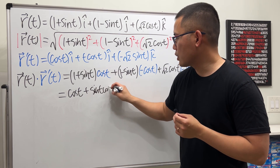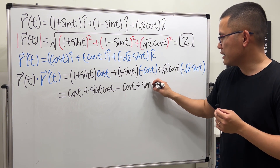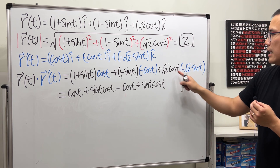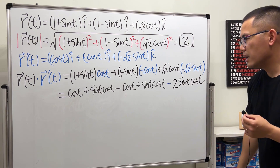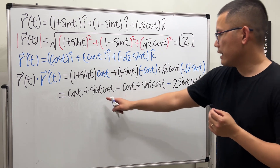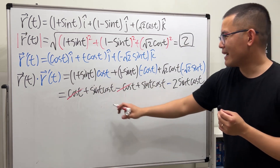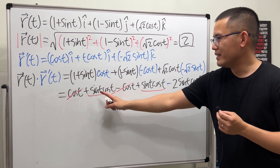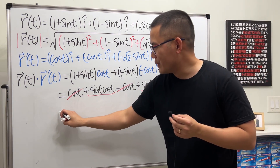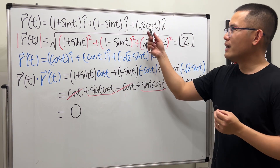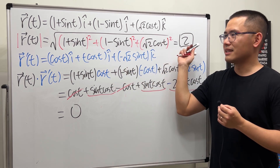Expanding: the first term gives cos t + sin t·cos t; the second gives -cos t + sin t·cos t; the last gives -2·sin t·cos t. The cos t and -cos t cancel. The two sin t·cos t terms combine to give 2·sin t·cos t, and subtracting 2·sin t·cos t gives zero. So the dot product is zero, confirming this vector function is orthogonal to its derivative because it has constant length.